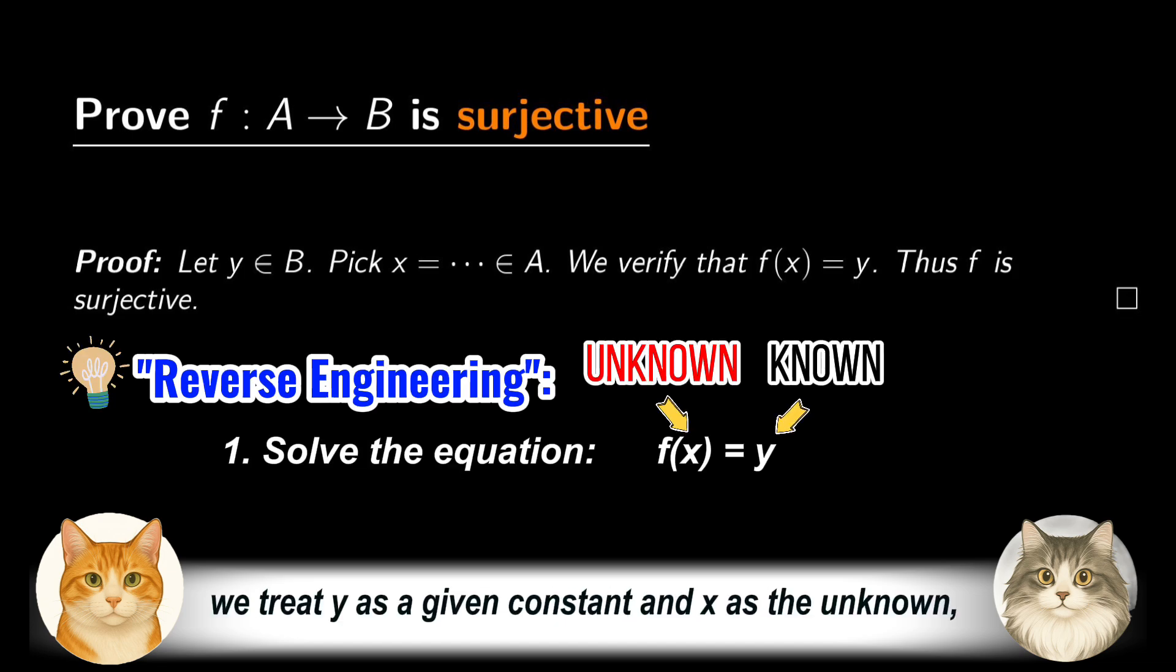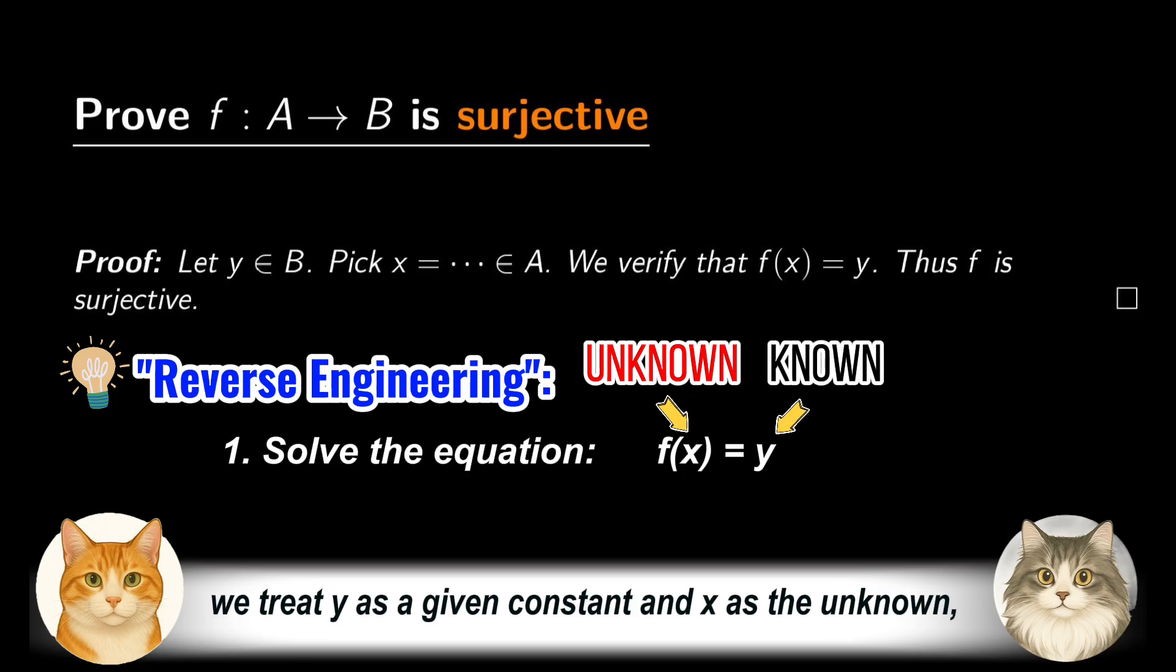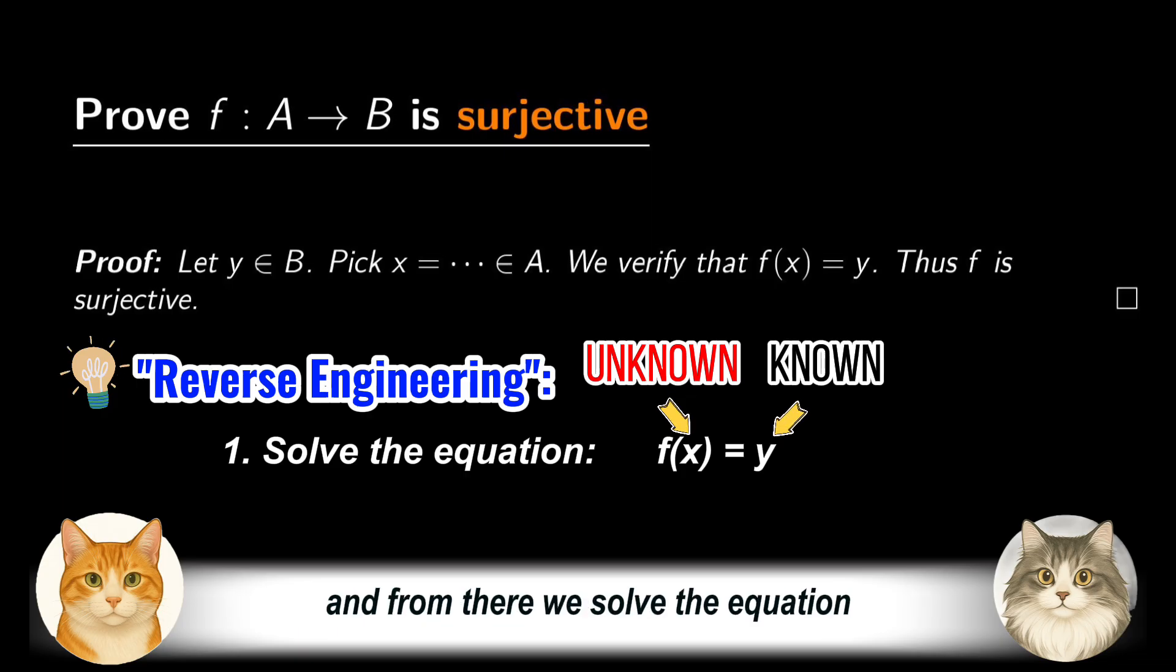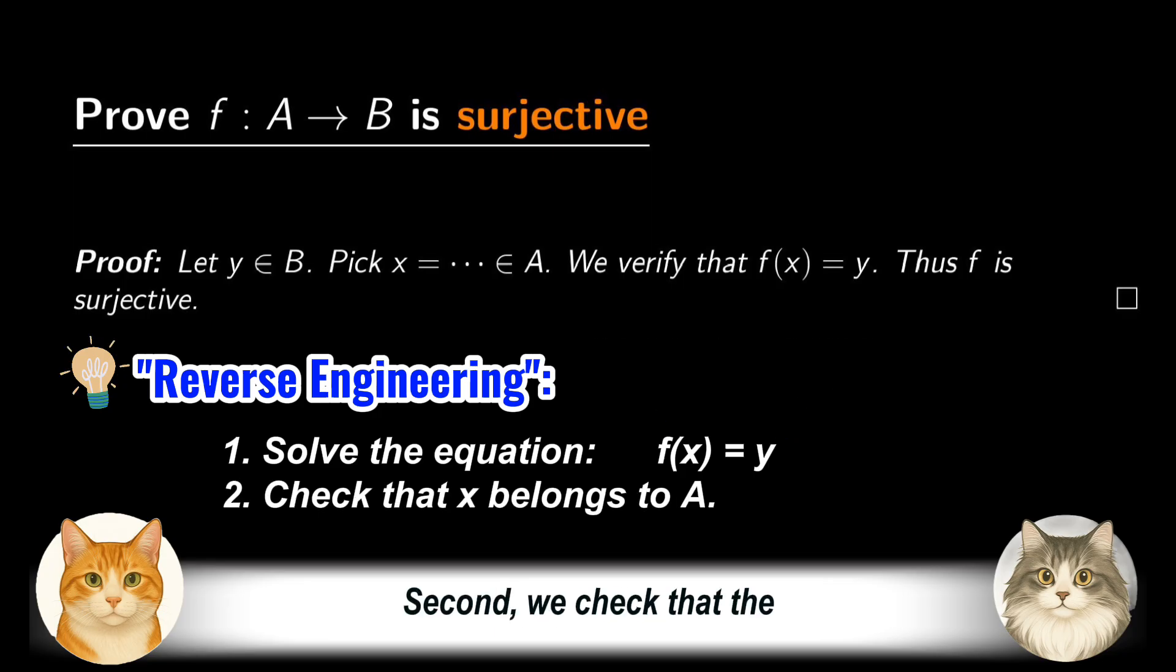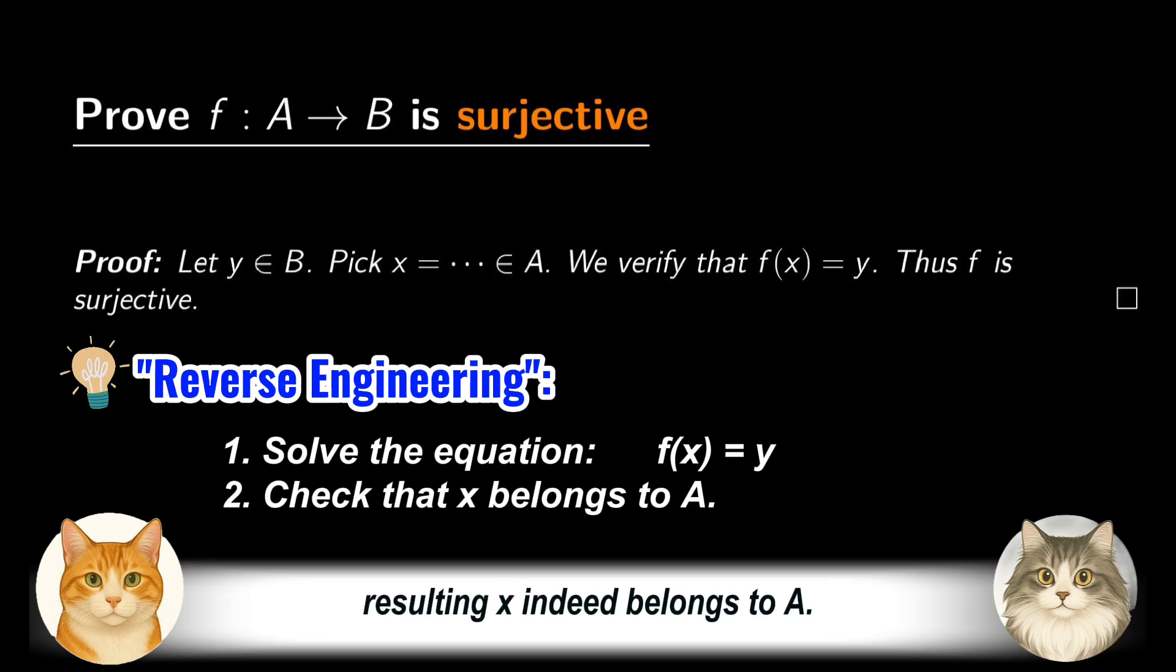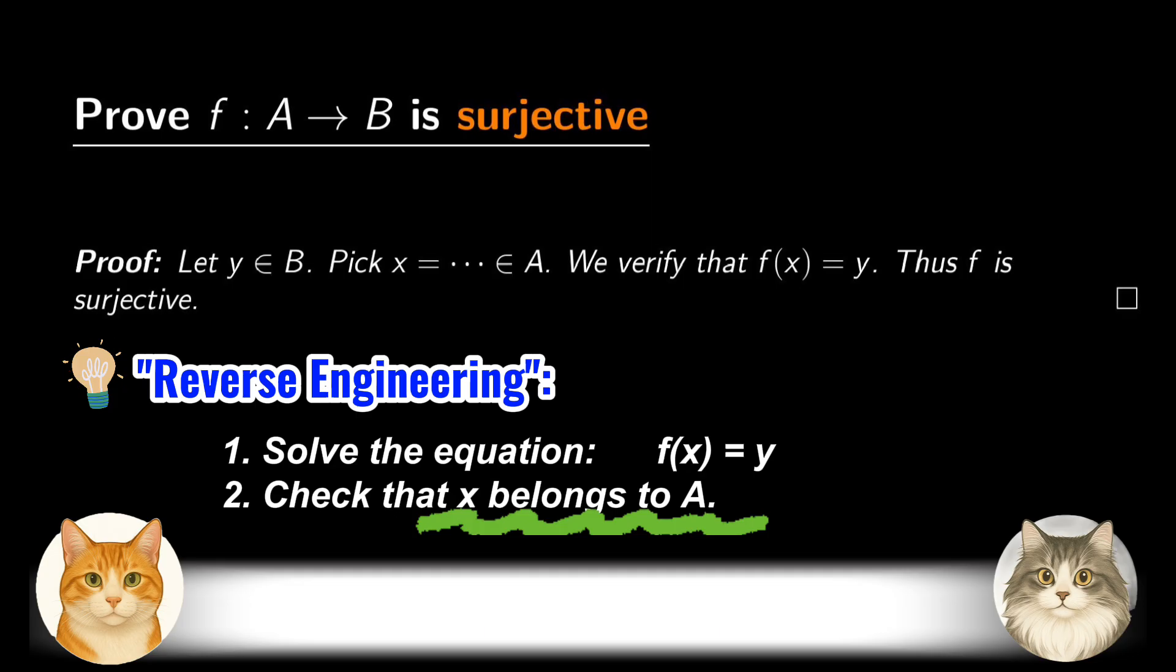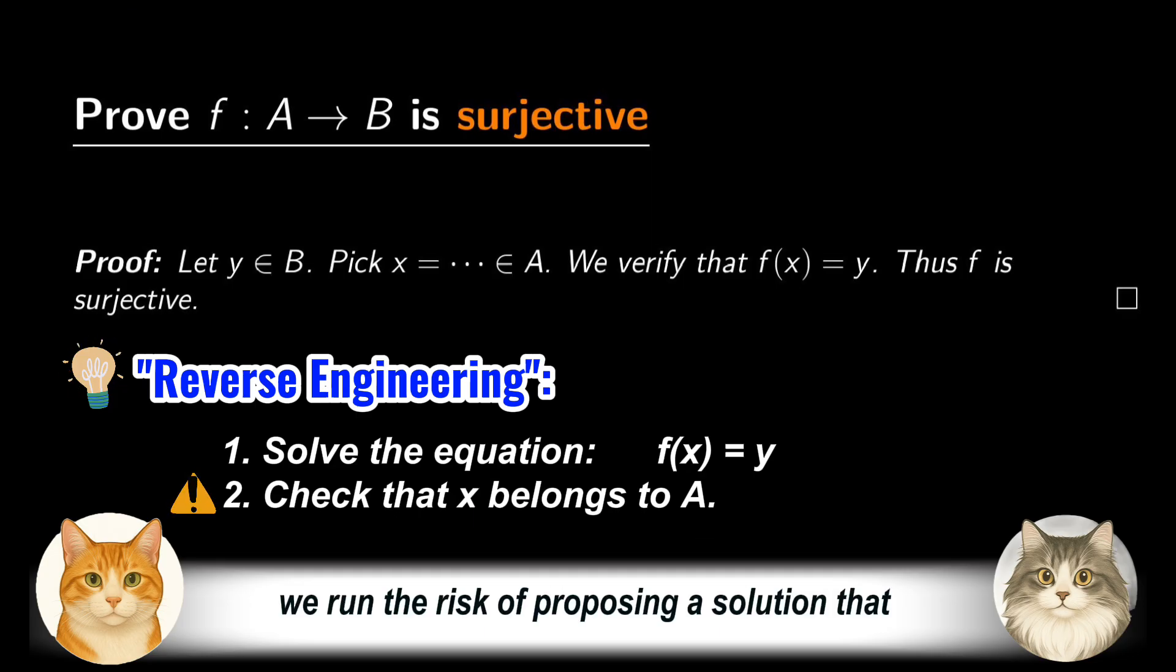First, we treat y as a given constant and x as the unknown, and from there, we solve the equation f(x) equals y to find x. Second, we check that the resulting x indeed belongs to A. We remind the audience that if we skip the second step, we run the risk of proposing a solution that does not lie in the domain, thus violating the definition of surjectivity.